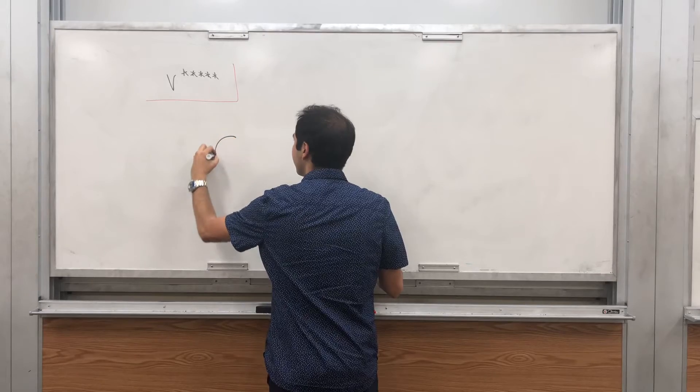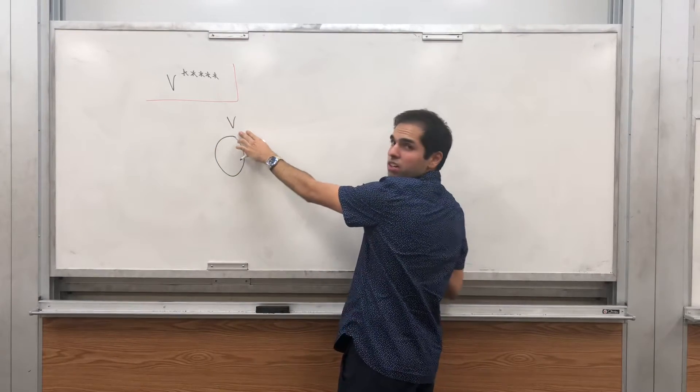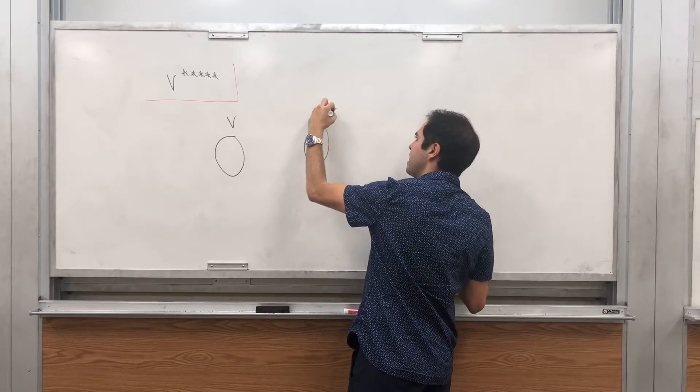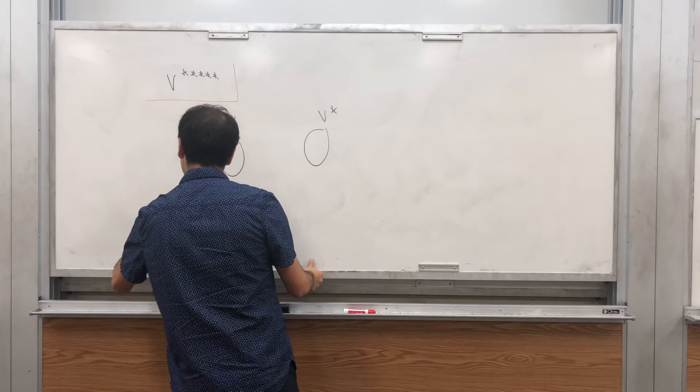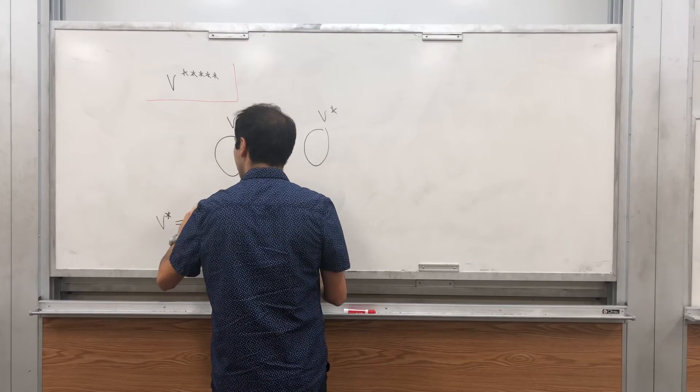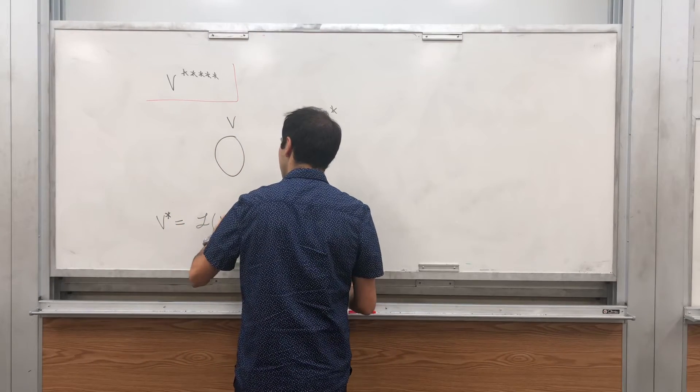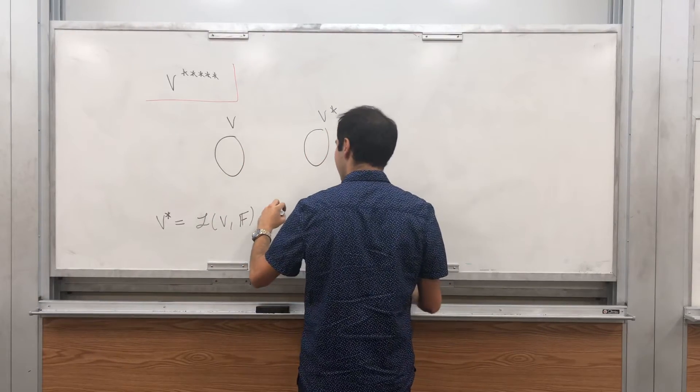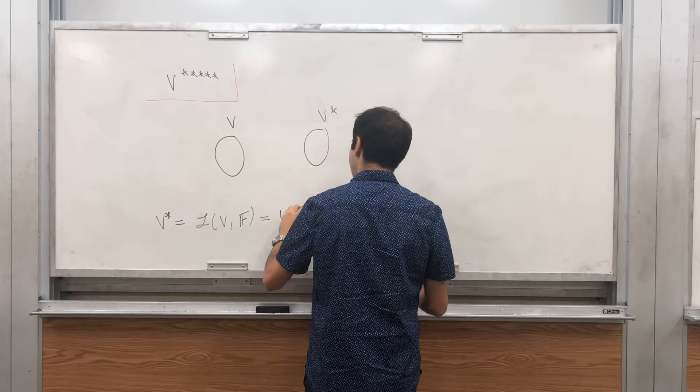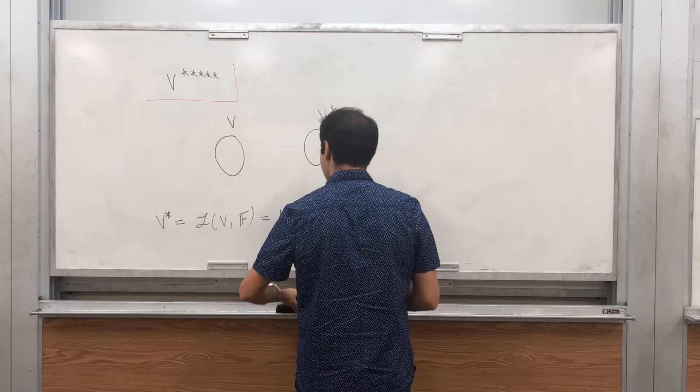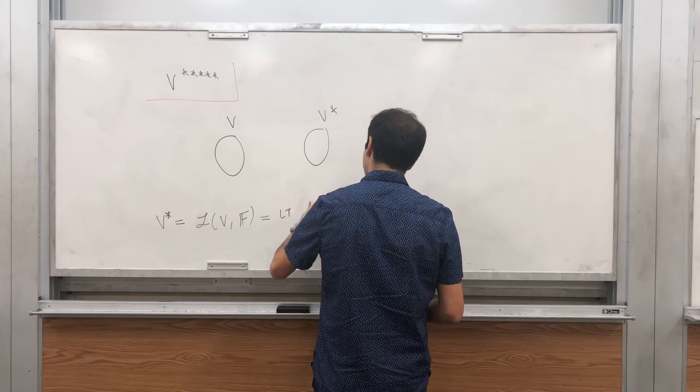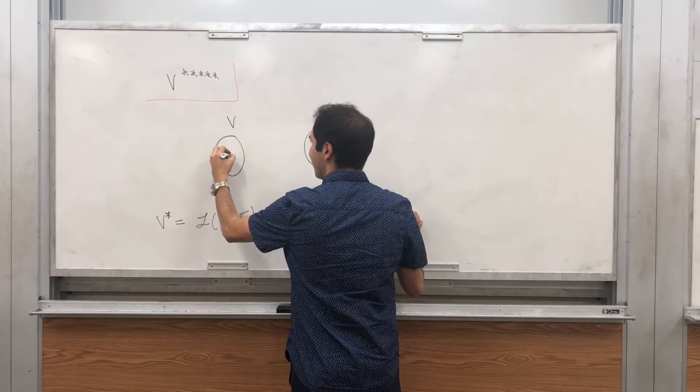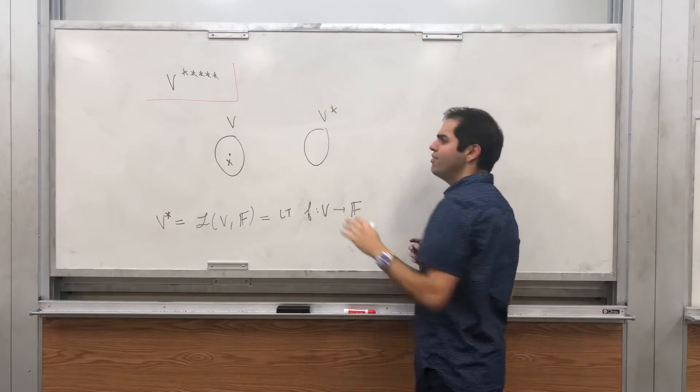Suppose you have a vector space V. We can define the dual space V star, which are just linear transformations from V to a field, so either real or complex numbers or other fields you like. Linear transformations F, so-called linear functionals from V to F.